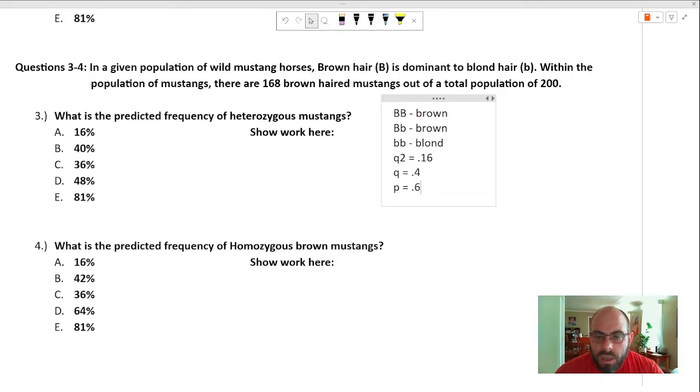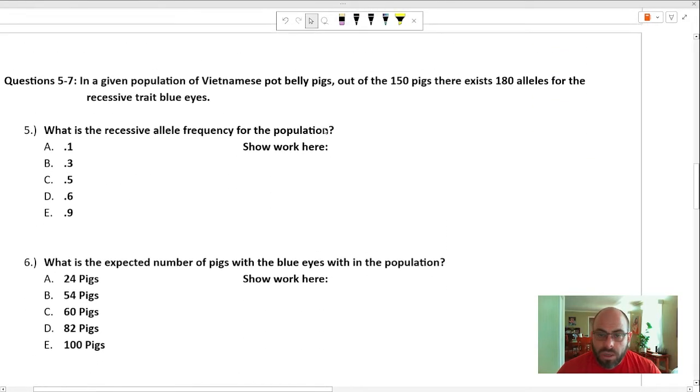And what is the predicted frequency? We've got number three of heterozygous mustangs - 2pq. Heterozygous percentage is 2pq. .4 times .6 is .24 times 2, .48. D is the correct answer. What is the predicted frequency of homozygous brown mustangs? That's going to be p squared. .6 times .6 is .36. C is the correct answer here. Give us something hard to do.